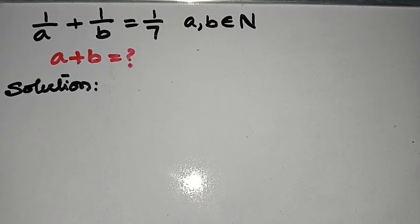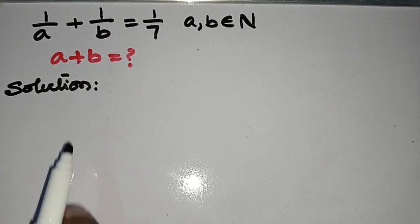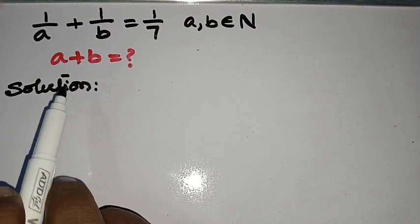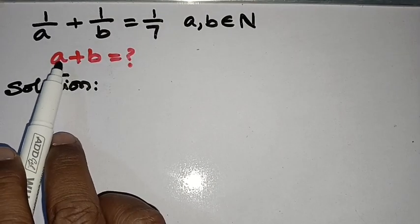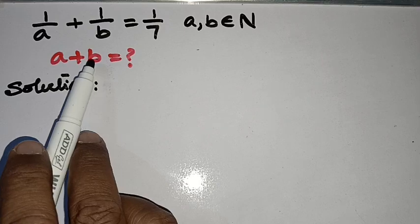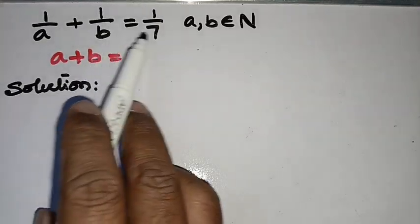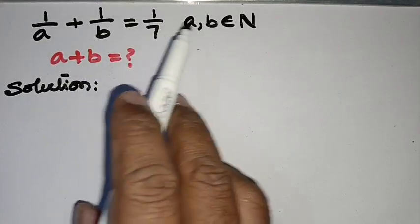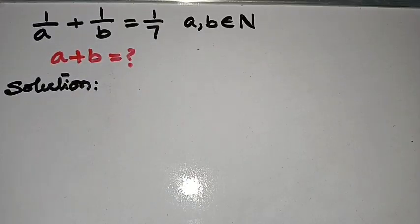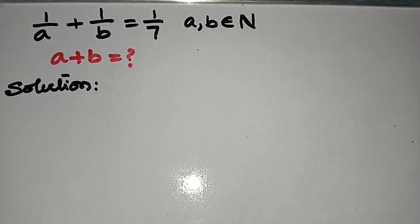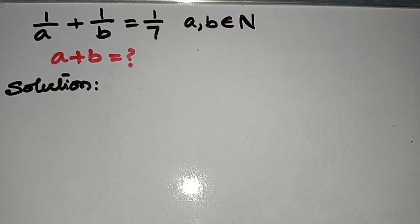Hello, welcome to Ababhi Network. Today we are going to find the value of A plus B for the problem 1 by A plus 1 by B is equal to 1 by 7, where A and B are natural numbers.